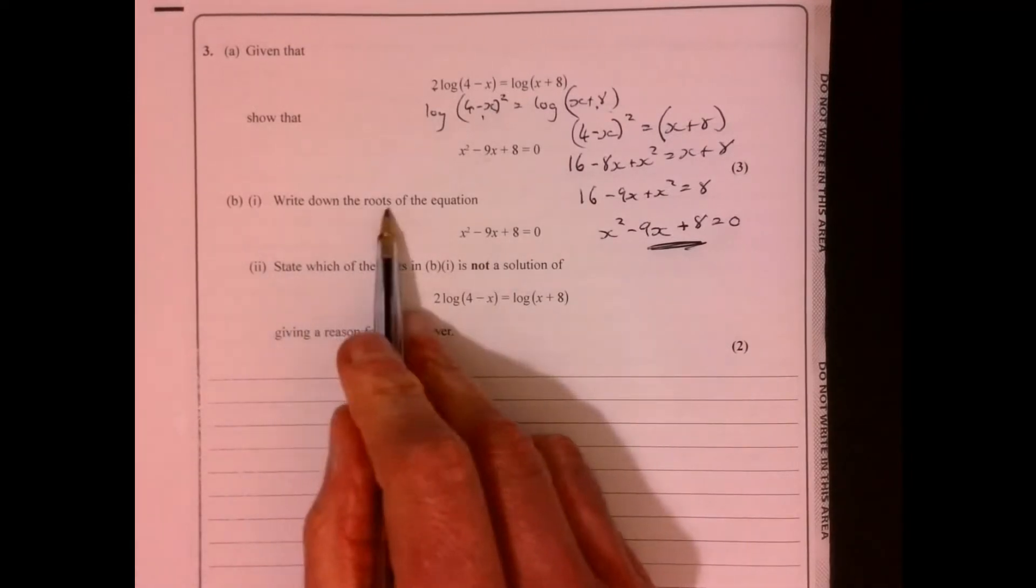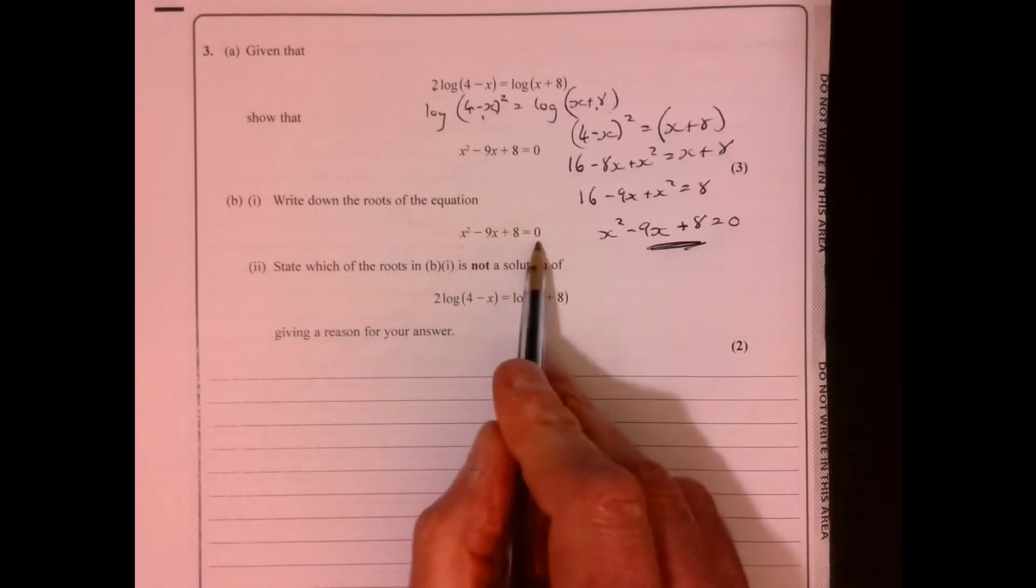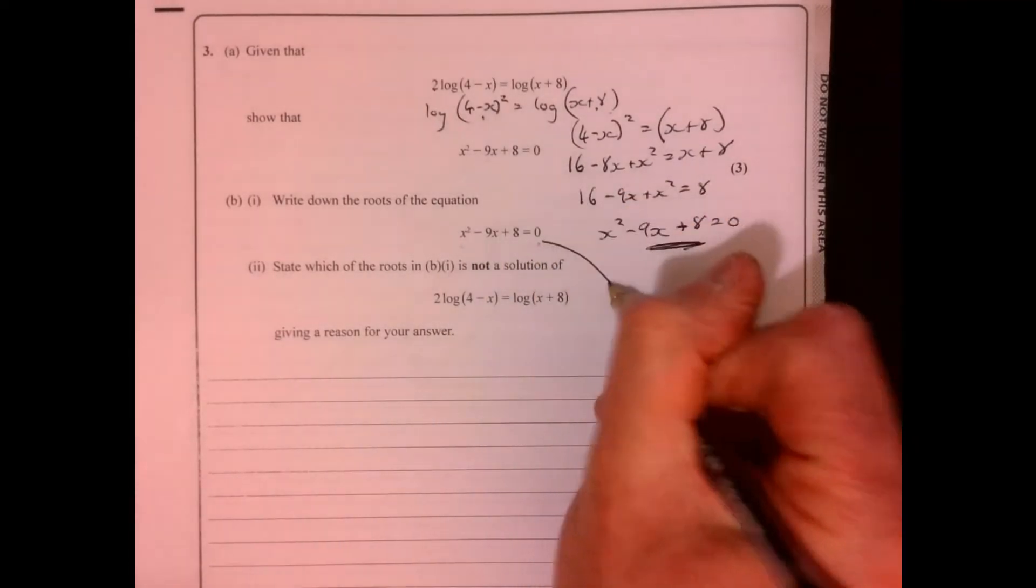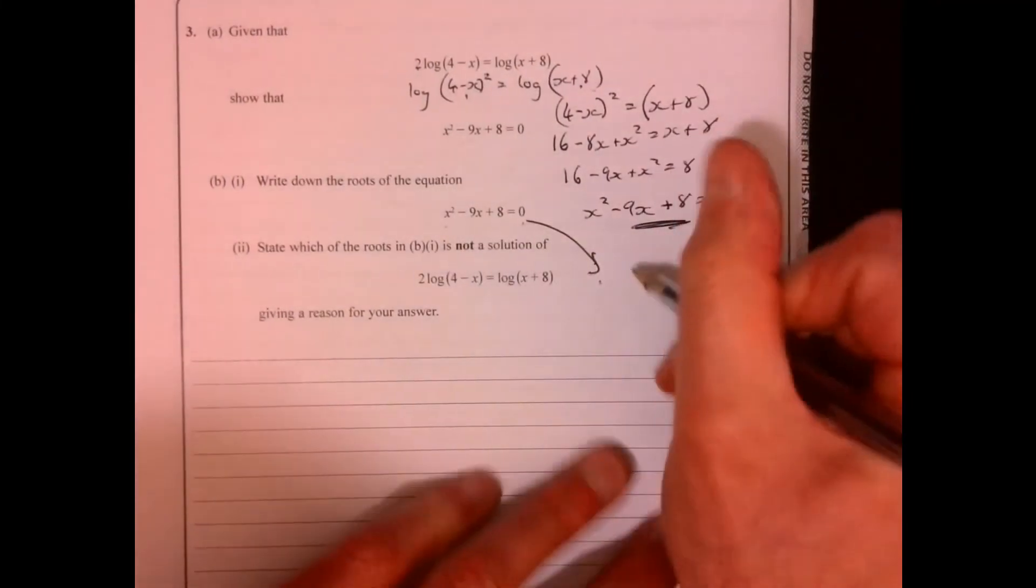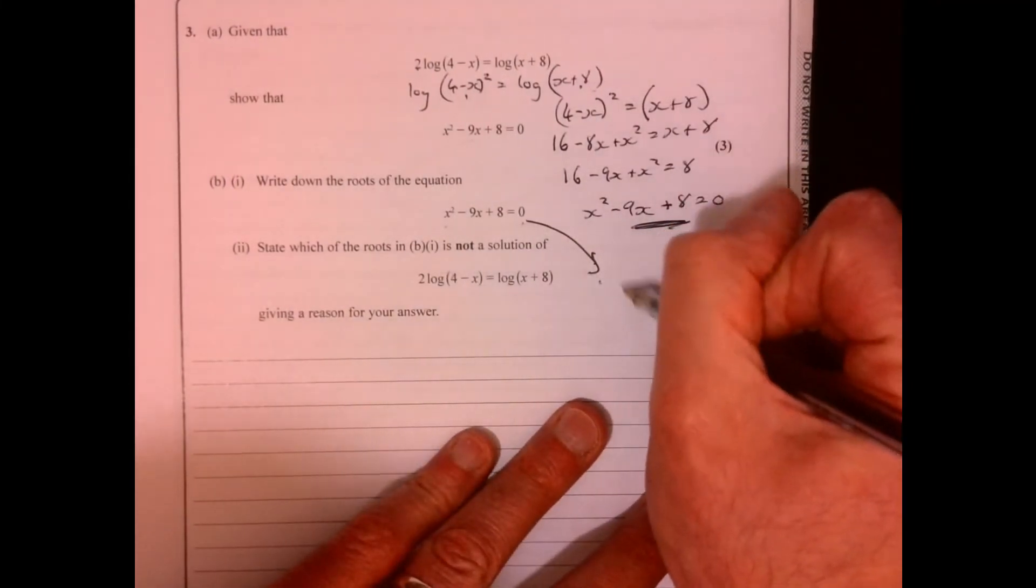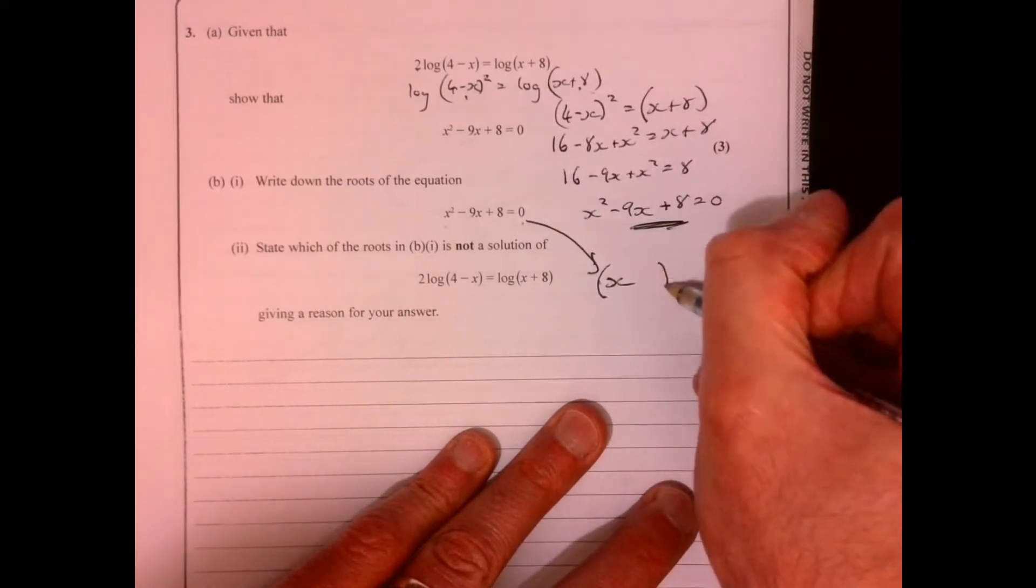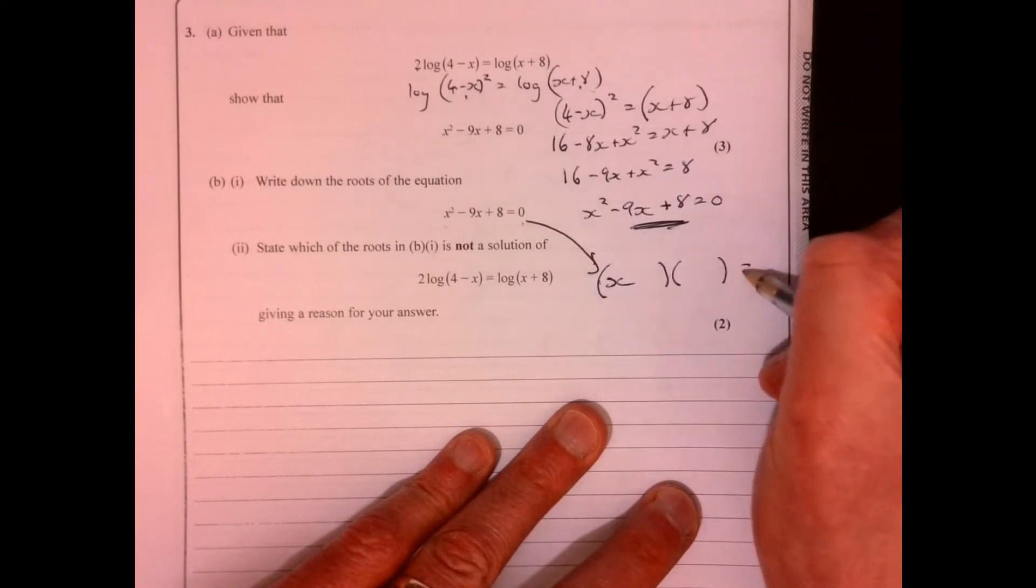Then it says write down the roots of the equation. Well, this one does actually squeeze it in over here for you. So it is just, we should be able to factorise this. Oh yeah, I didn't see that for a second. What are we going to have there?